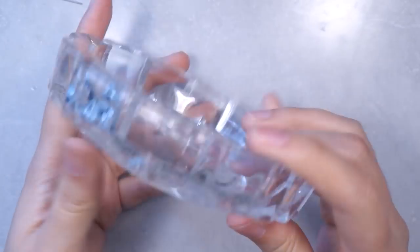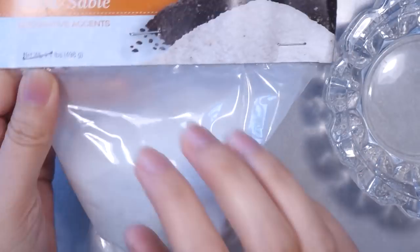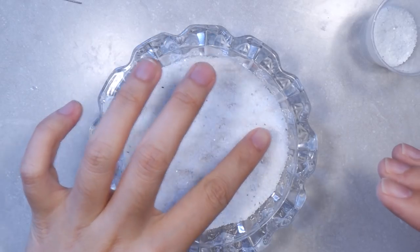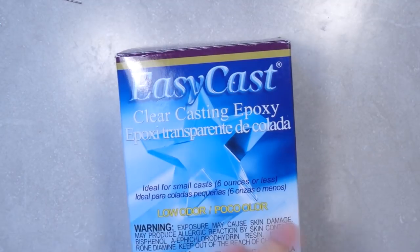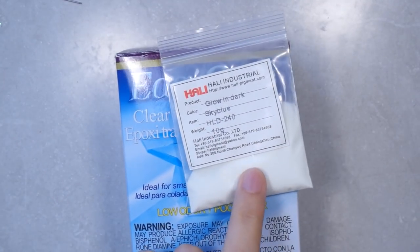Time for the resin part. I use an ashtray for the pond and pour in some white sand just enough to cover the bottom. No need to fill up the whole ashtray. I use easy cast because it has very low odor and I also use glow in the dark powder. I'm using sky blue.